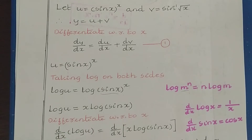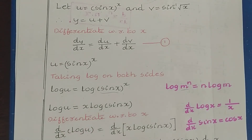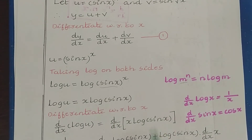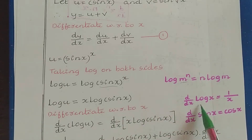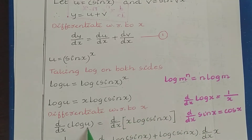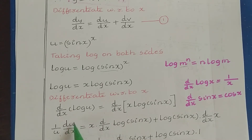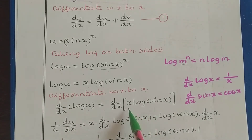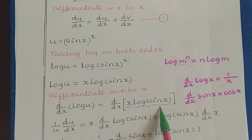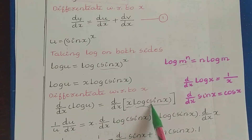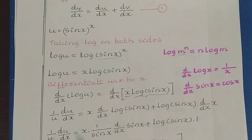So d/dx of log u = d/dx of x·log(sin x). The derivative of log u is 1/u · du/dx. On the right side, we apply the product rule to x and log(sin x): write the first function as it is and find the derivative of the second, plus write the second function and find the derivative of the first.